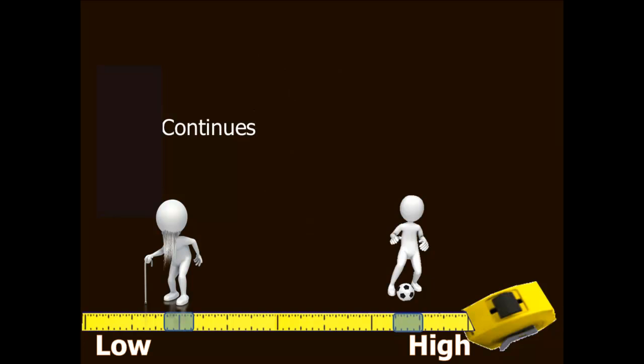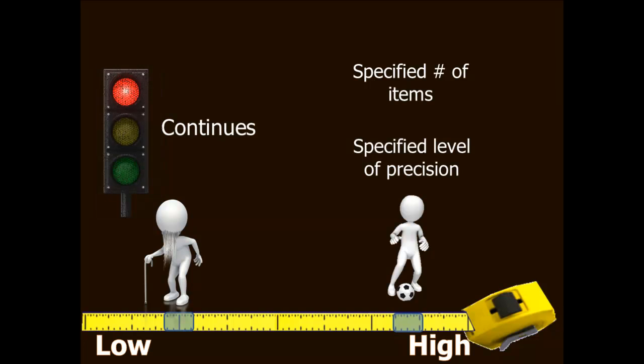The CAT algorithm continues until either A, a specified number of items have been administered. For instance, you might tell the CAT to administer seven items to everyone. Or B, the CAT algorithm can be programmed to continue until a specified standard error is reached. Or you can use some combination of the two. The rules that tell the CAT when to stop are aptly named. They're called stopping rules. This is a rare example of accessible psychometric terminology.